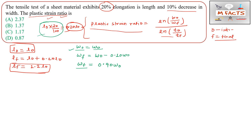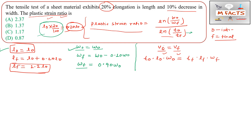Now the question asks for the plastic strain ratio r, which requires ln(w₀/wf) divided by ln(t₀/tf), where t is thickness. We know the length and width values, but we don't know the thickness. Since this is a plastic deformation process, the initial volume equals the final volume, i.e., v₀ equals vf.